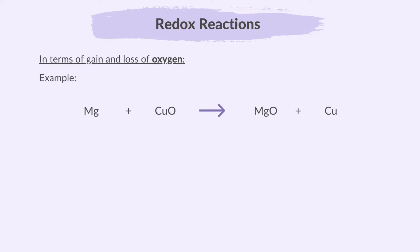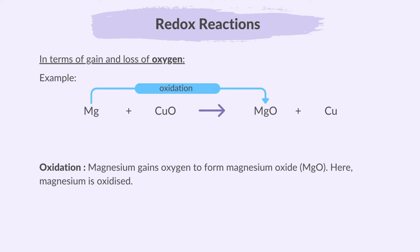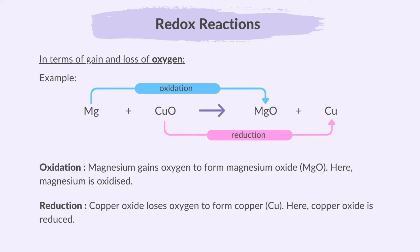Here's a simple example of a redox reaction involving the transfer of oxygen: the reaction between magnesium and copper oxide. Magnesium gains oxygen to form magnesium oxide — here, magnesium is oxidized. Next, copper oxide loses oxygen to form copper — here, copper oxide is reduced. So this reaction involves both oxidation and reduction.